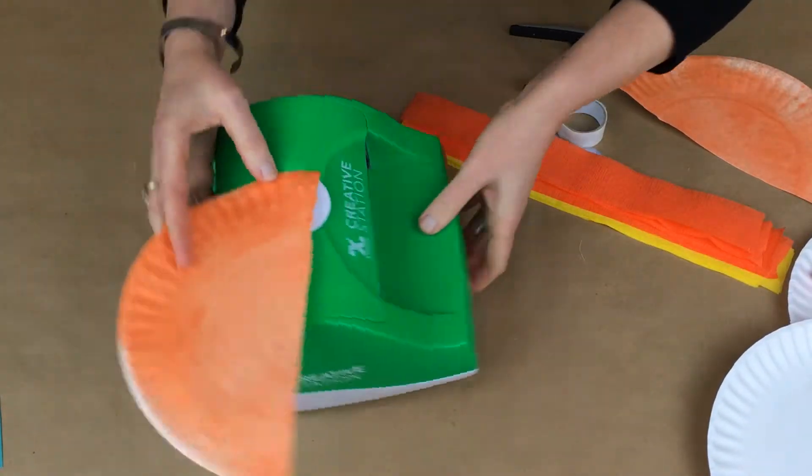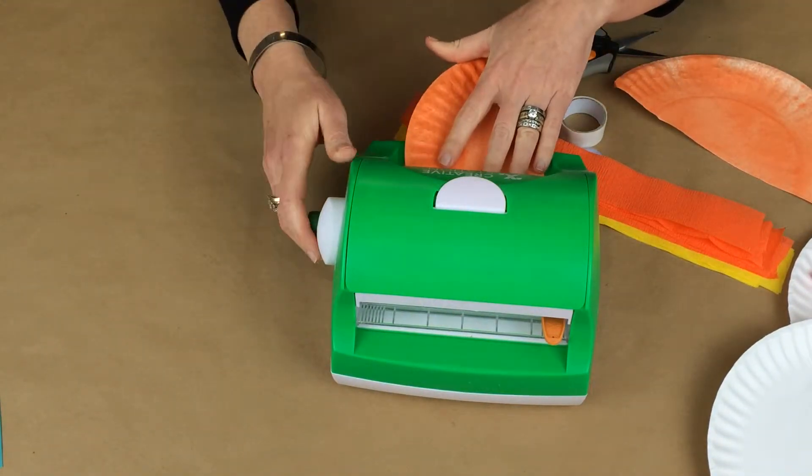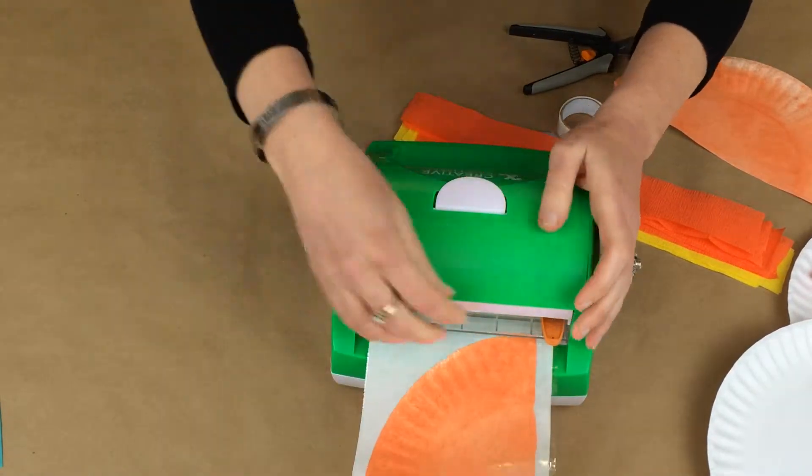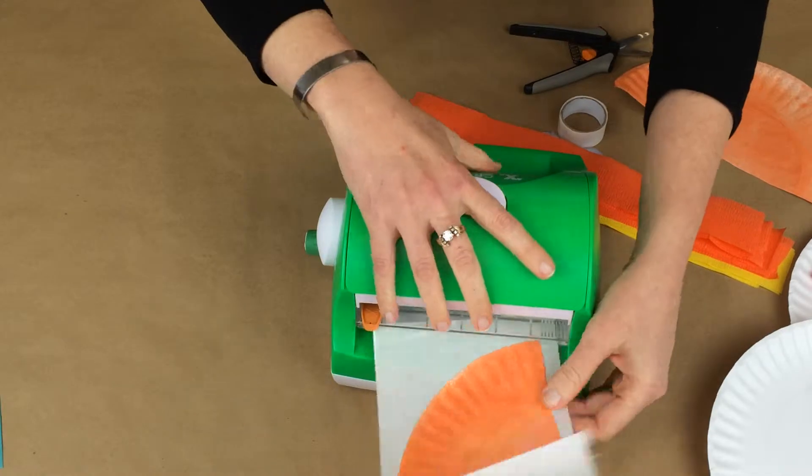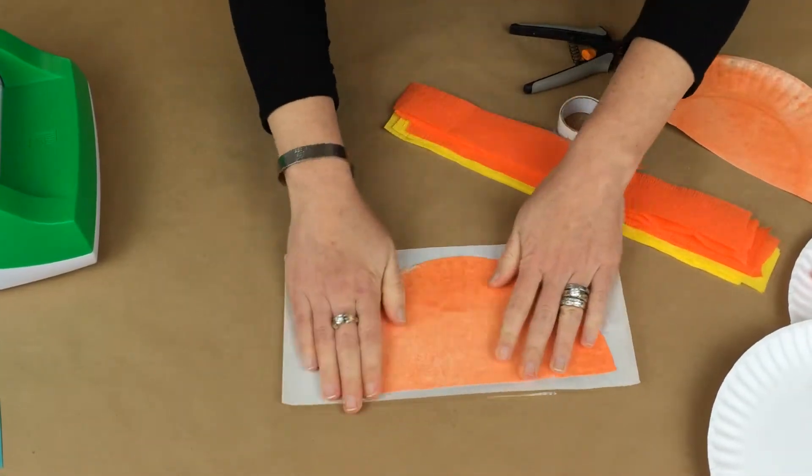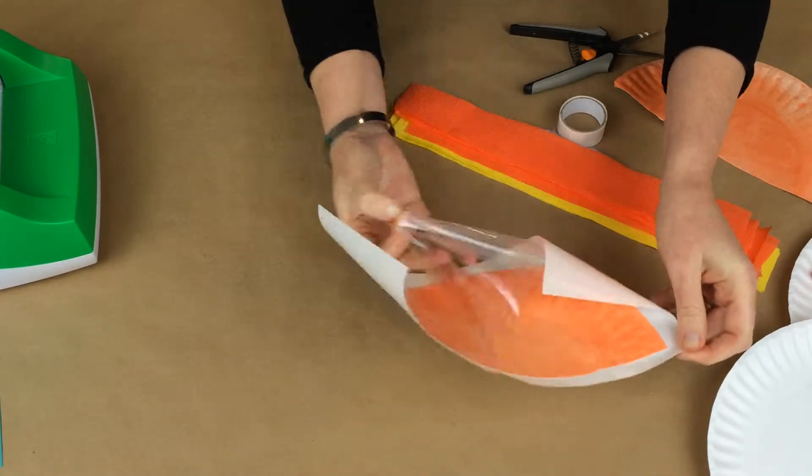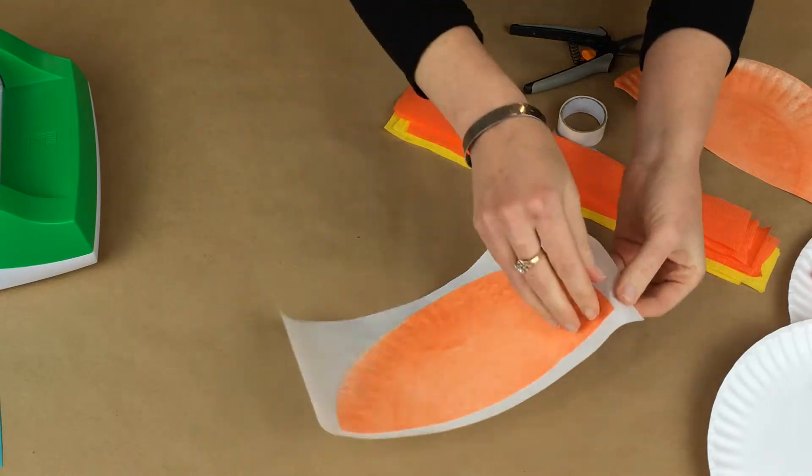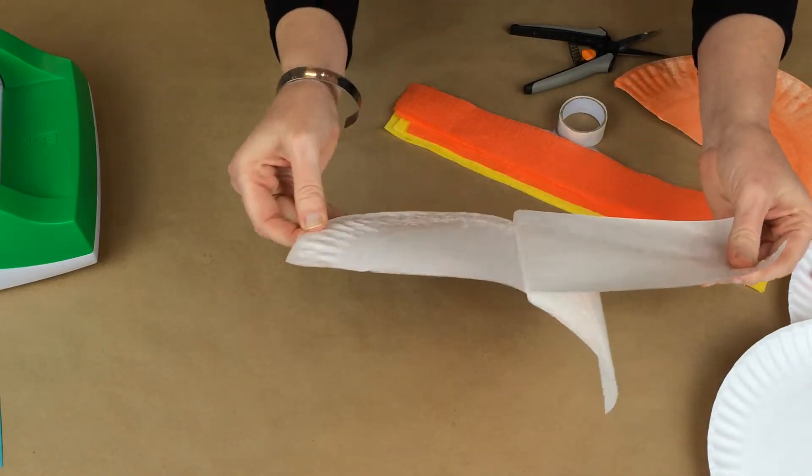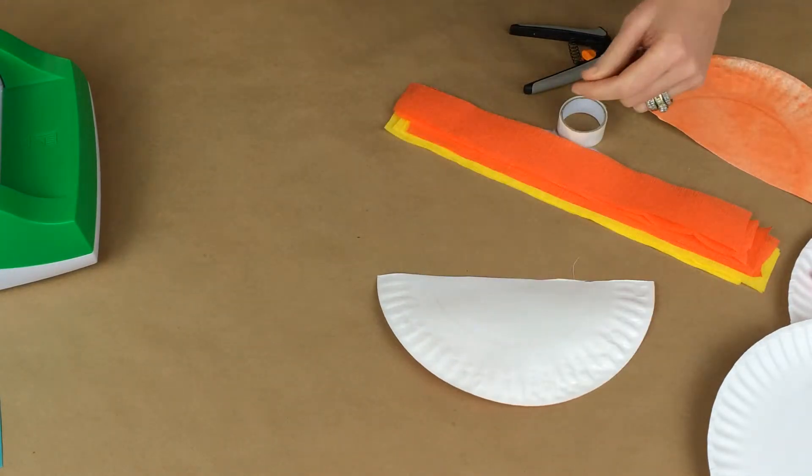Take your Creative Station and insert half of your paper plate into the Creative Station with the color side facing up. I'm just going to roll that through. Slide the trimmer. Now this one you might want to give it just a little bit of a rub to make sure you've got the adhesive everywhere you need. I'm going to peel that off and then peel my paper plate off of the backing and lay it down on the table with the sticky side facing up.